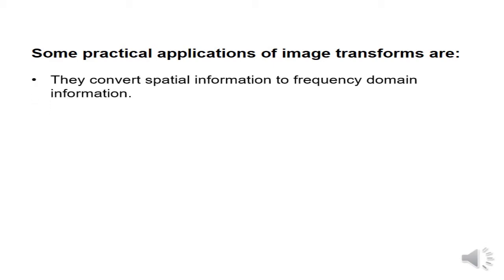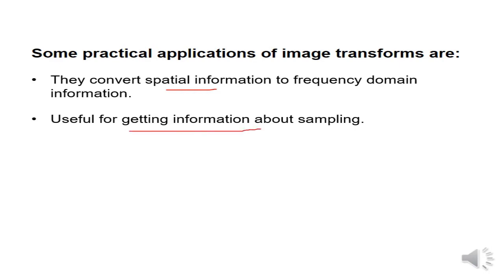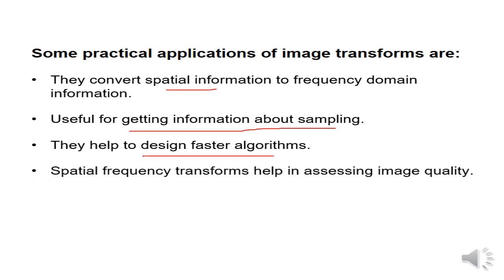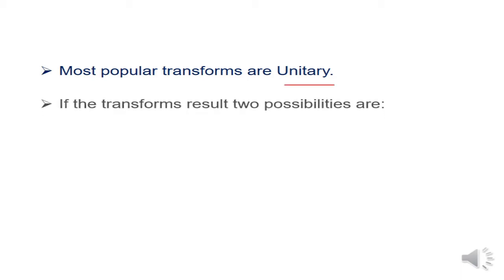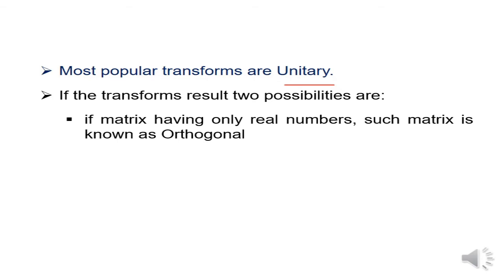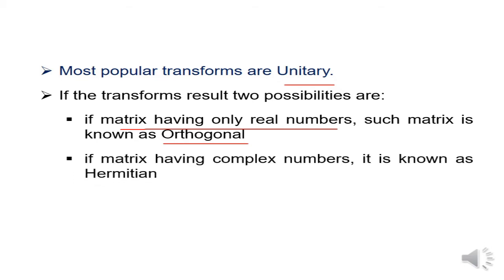Some practical applications of image transforms are: they convert spatial information to frequency domain information, they are useful for getting information about sampling, they help design faster algorithms, and spatial frequency transforms help in assessing image quality. The most popular transforms are unitary transforms. If the transform result is a matrix having only real numbers, it is known as an orthogonal matrix. If the matrix has complex numbers, it is known as a Hermitian matrix.